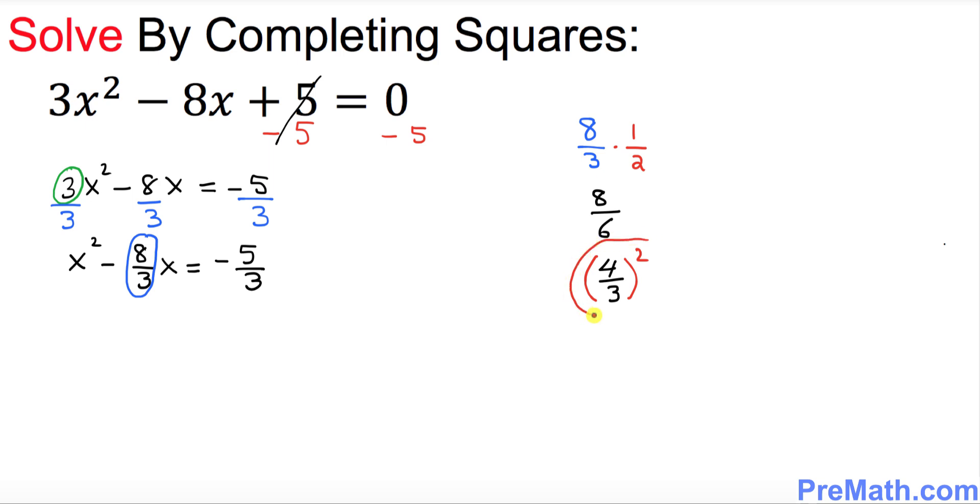Whatever we got, this quantity 4 over 3 squared, we're going to add on both sides of these equations. So I'm going to put down x² minus 8 over 3 x and then I want you to put down plus, equal to negative 5 over 3 plus.